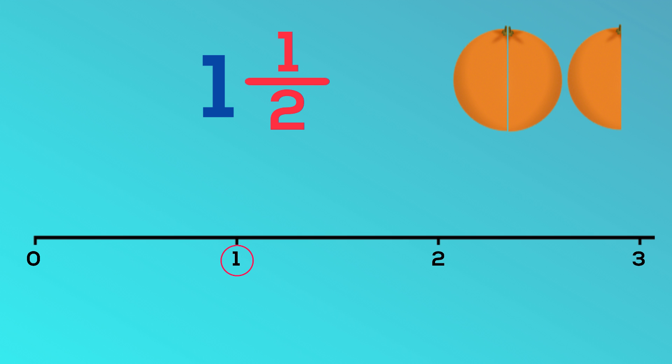We're going to take the next whole, between one and two, and divide it into two equal parts. On our number line, we have found one and one half. One and a half.